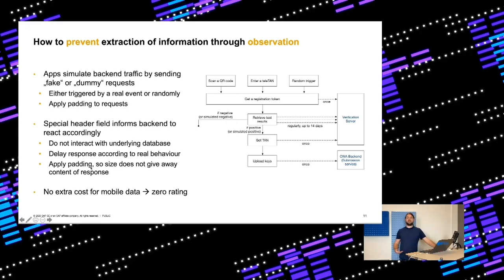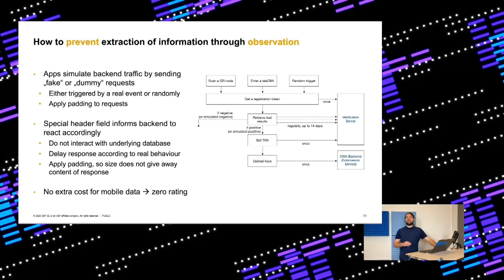To prevent the backend from being swamped by fake requests, a special header field tells the backend to ignore them. The backend skips all database interaction and data modification but still introduces a realistic delay and returns a response identical to a real request response. Additionally, data packets in both directions — client to server and server to client — are padded so they're always the same size regardless of content, making size-based inference impossible. This traffic is also zero-rated with German mobile operators, so users are not charged for the additional data.